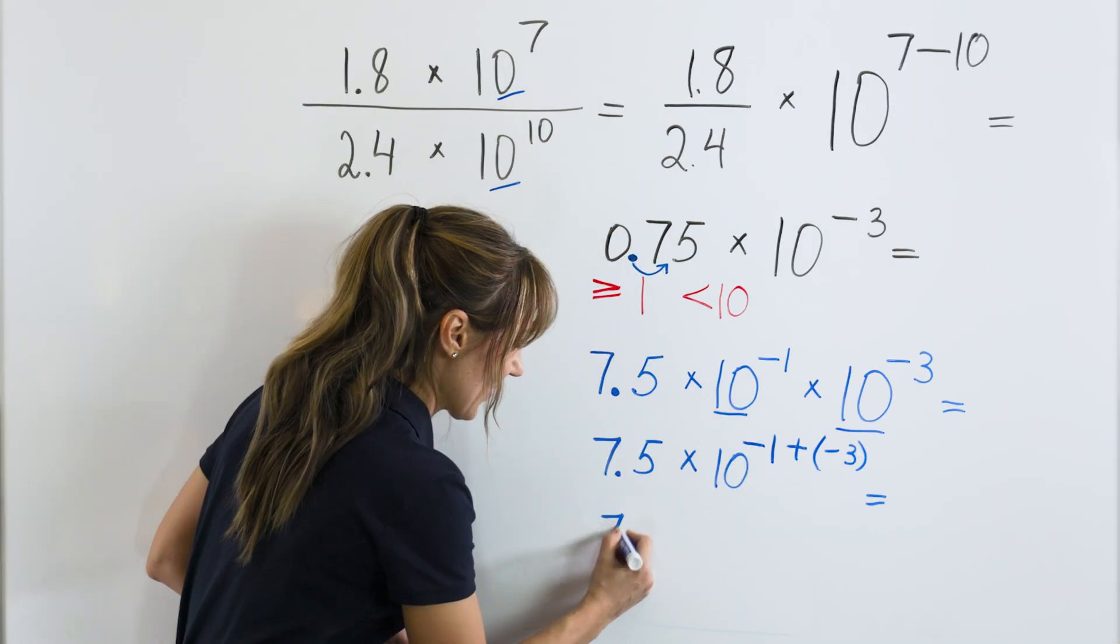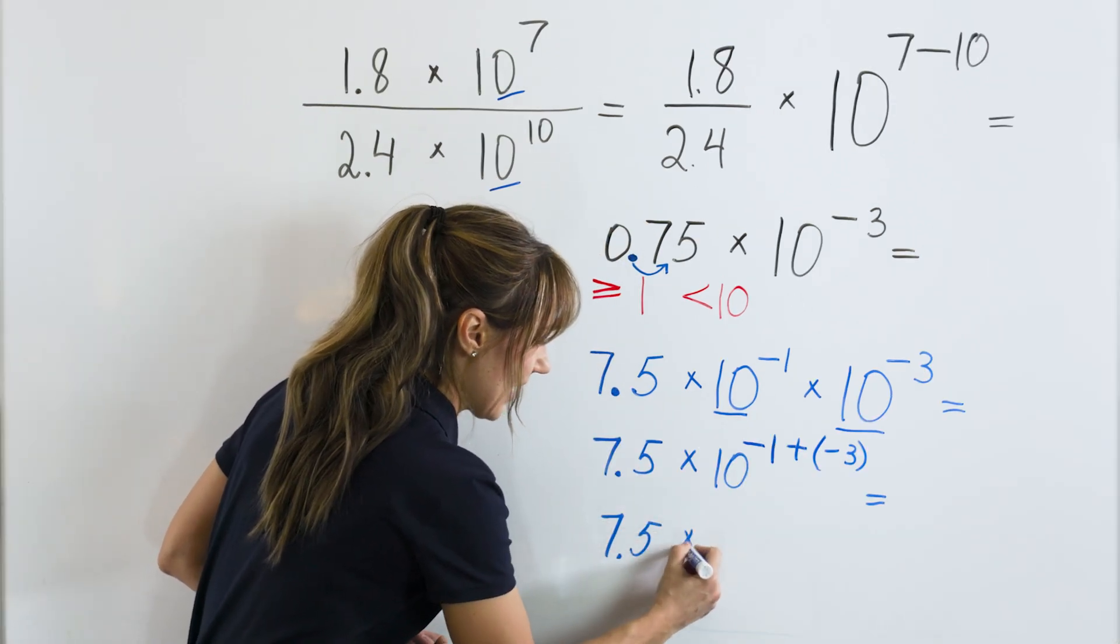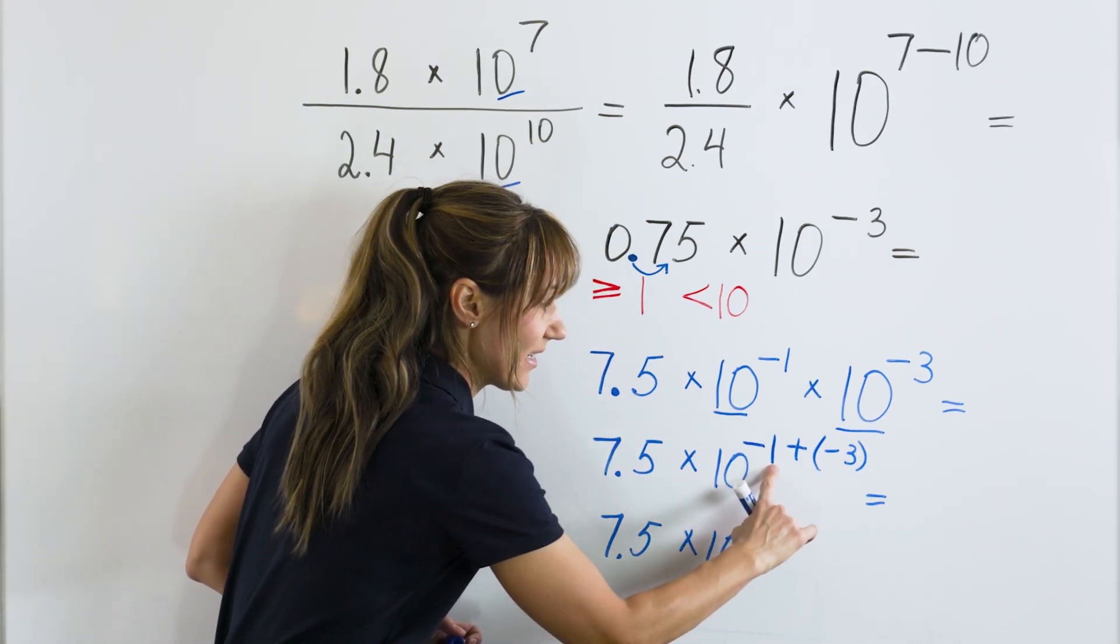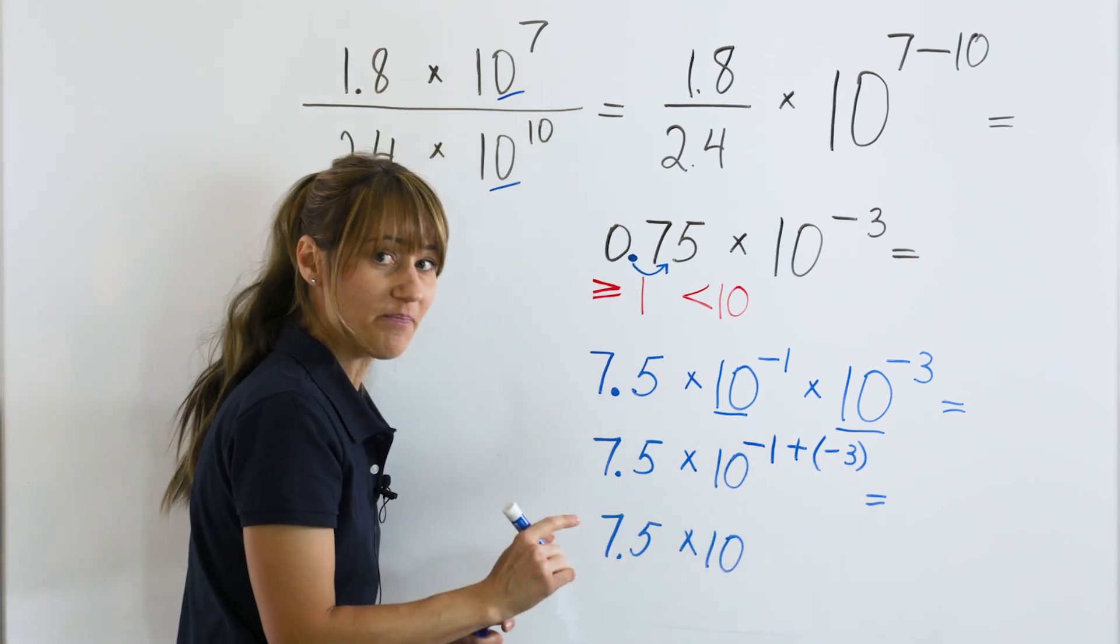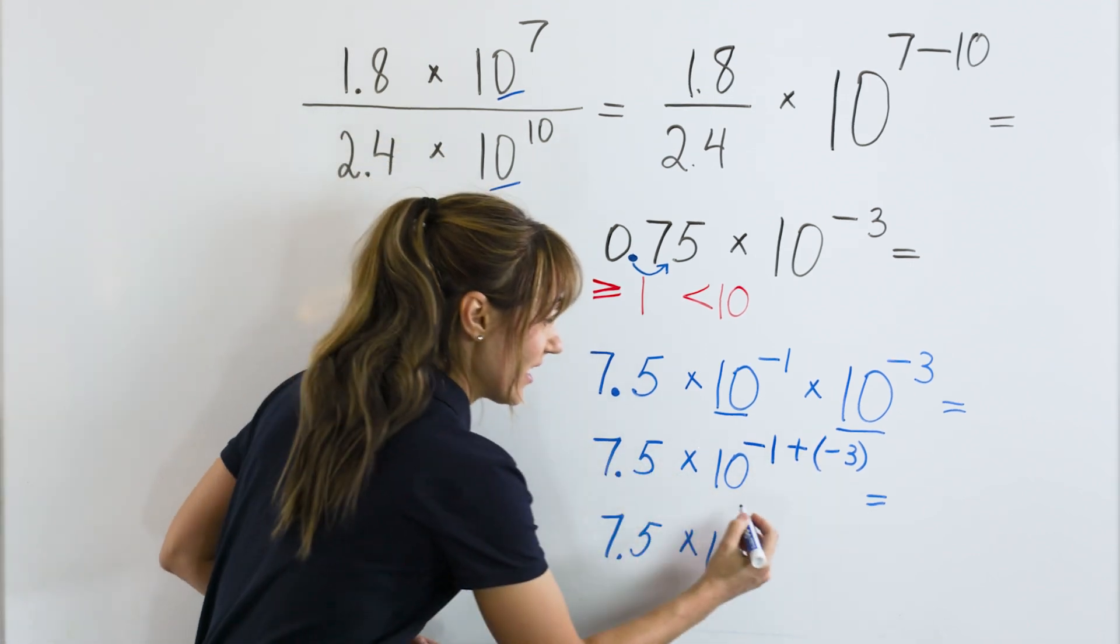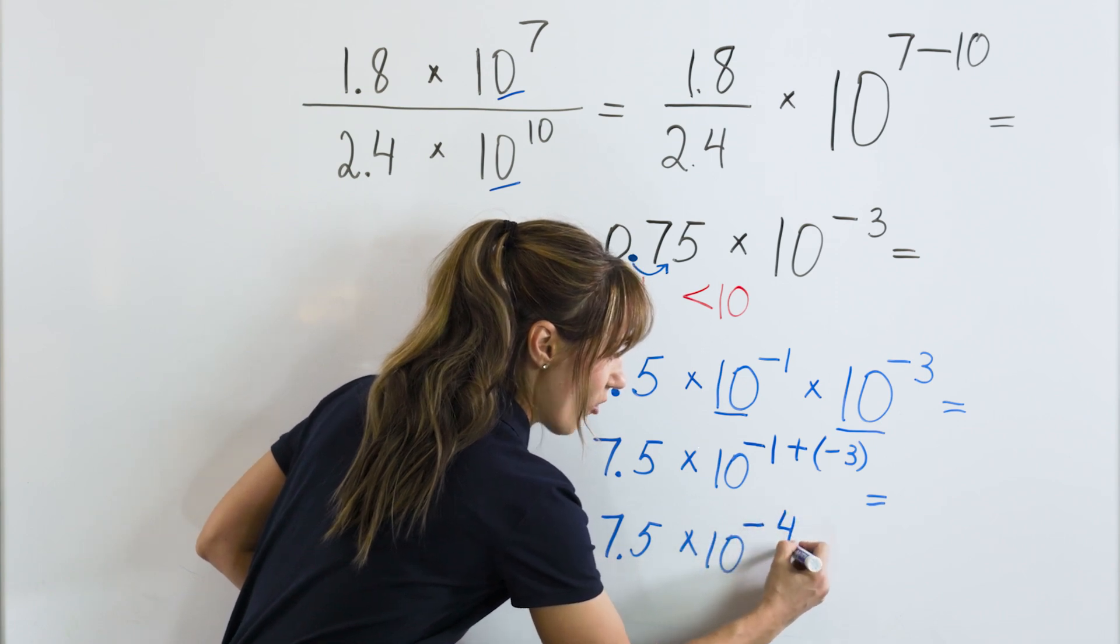Let's do it. Almost there. 7.5 times 10 to the power of negative 1 plus negative 3. Adding two negative numbers, the result is negative 4.